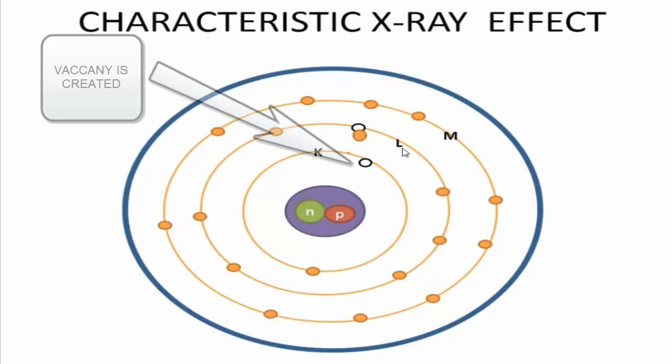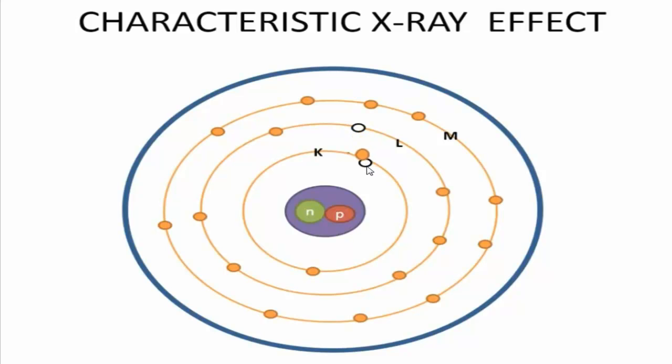Now the atom is unstable and a vacancy is created. To make the atom stable, an electron from an upper shell will fall into the lower shell vacancy. The electron from the L shell will fall into the K shell to restore stability. After the electron from the L shell falls into the K shell,